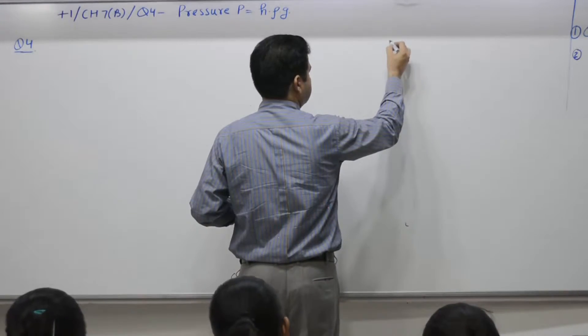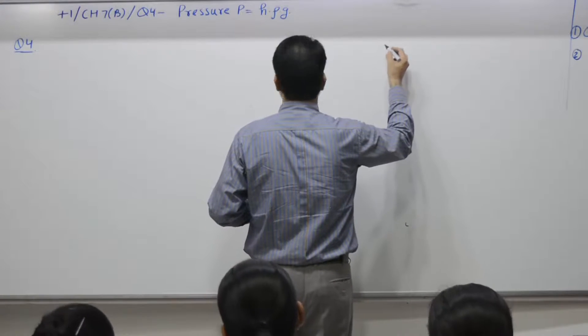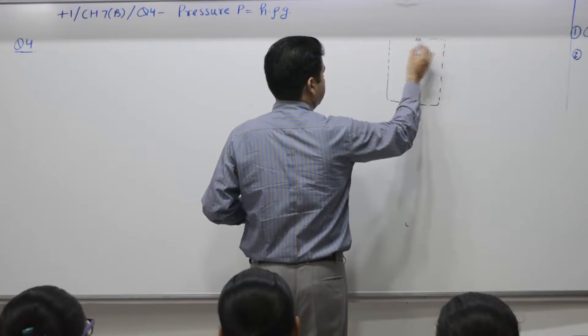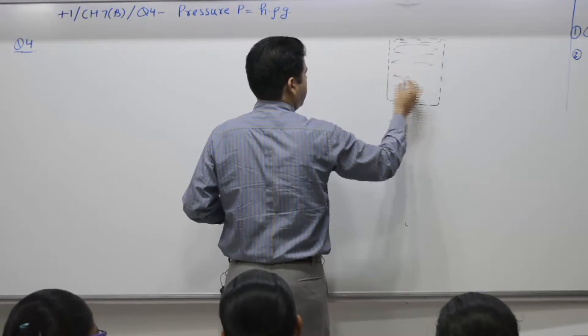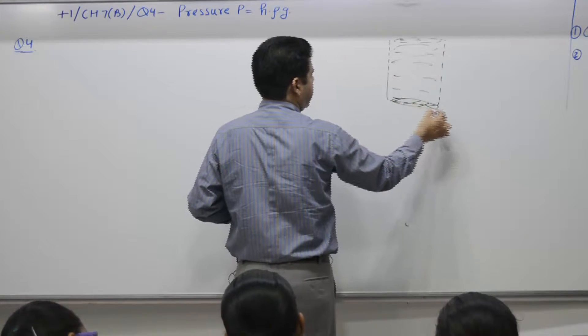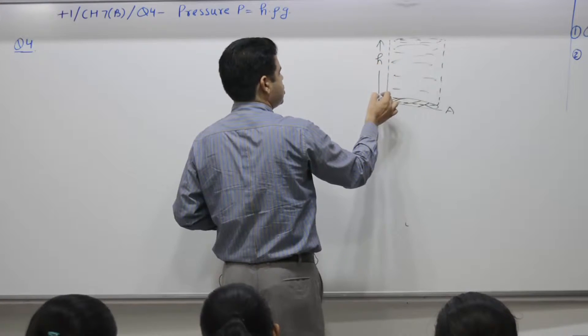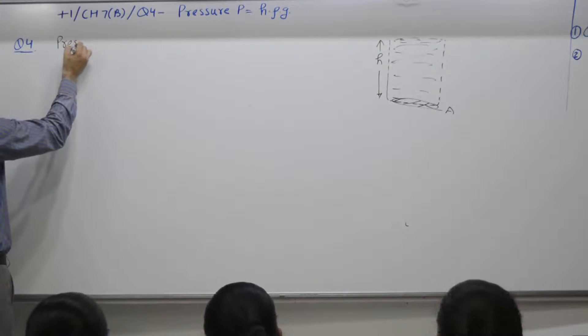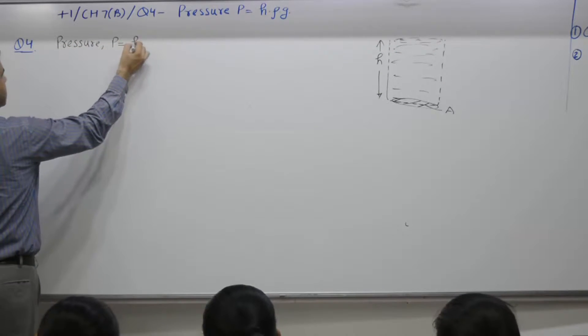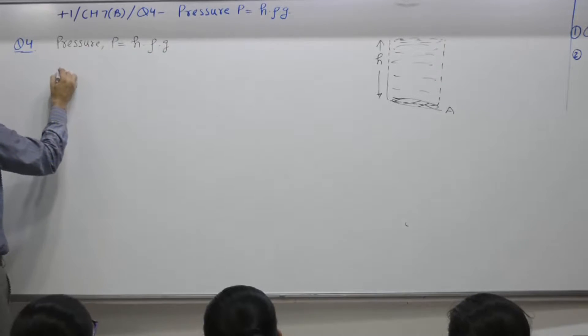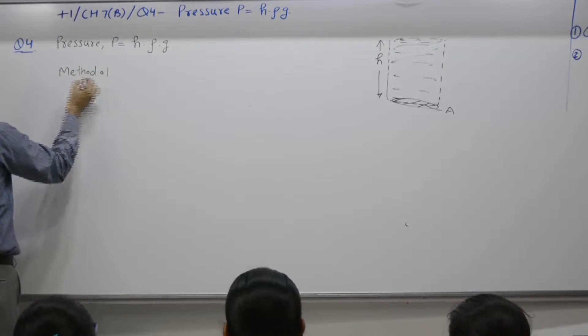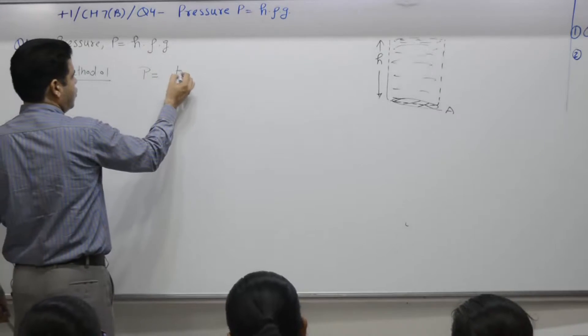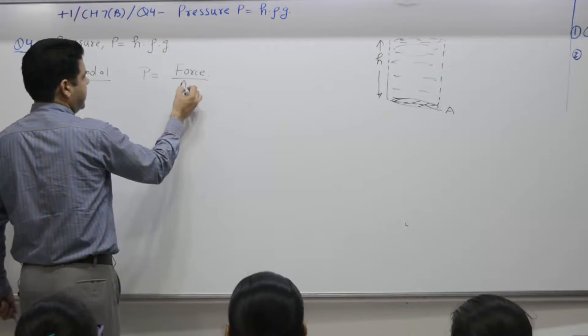Simple arrangement is, that is you can say method 1. A container of base area A, height H. We have to prove pressure P is equal to H rho G, method 1. Pressure at the bottom is equal to what? Force divided by area.